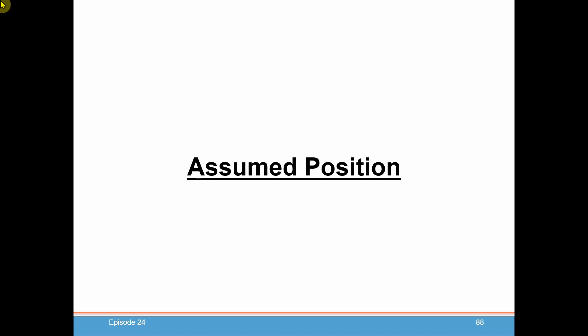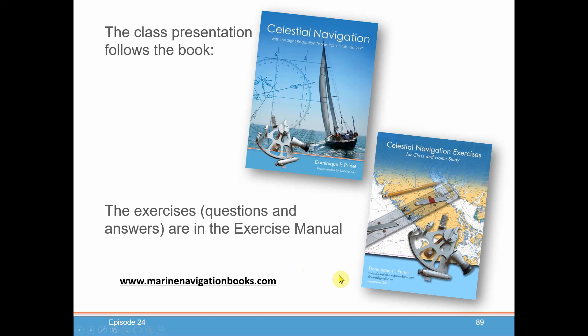Welcome to episode 24 of Dominique Pernet's course on Celestial Navigation. In this episode, we're going to talk about assumed position, probably the last crucial step to understand before we move on to more advanced topics. My name is John Pinto. I am an amateur astronomer and a mathematician, and I'll be presenting Dominique's course to you. Dominique's course is in full in these books that he wrote called Celestial Navigation and the accompanying exercise book.